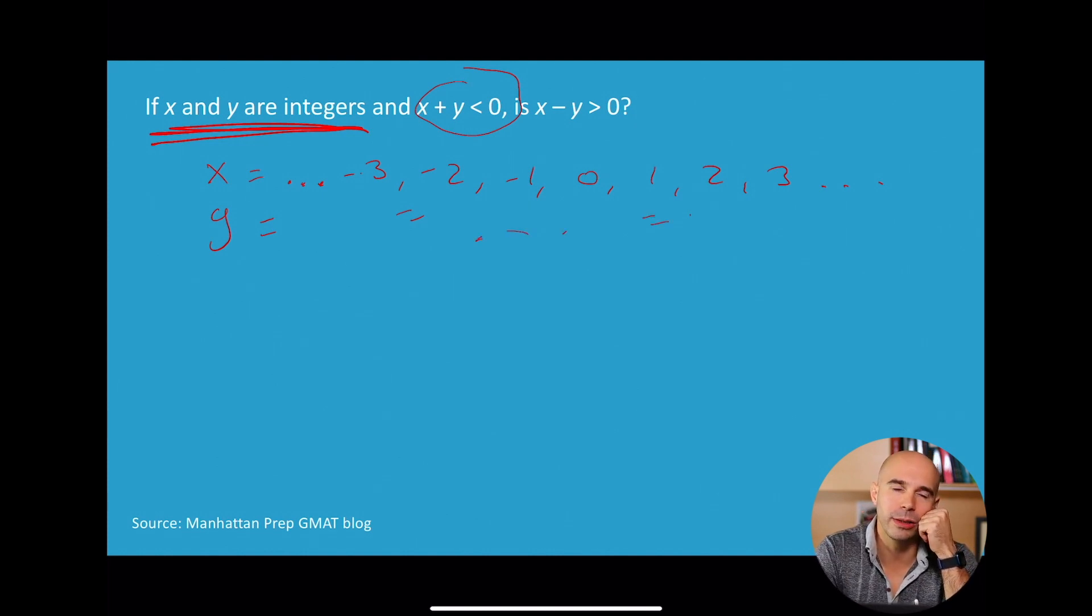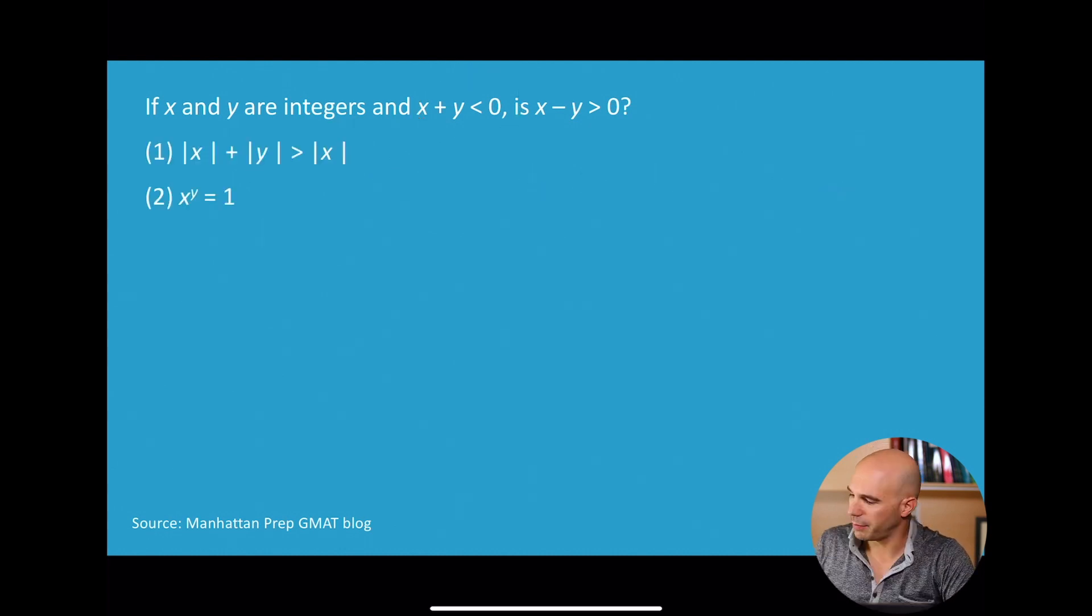Now what are they asking us here? They want to know if you add Y to both sides, they're asking is X greater than Y. In other words, it's a yes-no question. They want to know the relative order of X and Y on the number line. If we plot X and Y on the number line, which one is on the right and which one is on the left? That's essentially what we need to figure out.